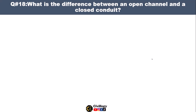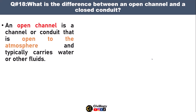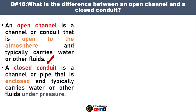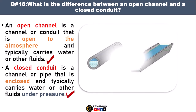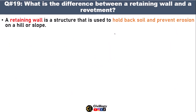Question number eighteen: what is the difference between an open channel and a closed conduit? An open channel is a channel that is open to the atmosphere and typically carries water or other fluids. Whereas a closed conduit is a channel or pipe that is enclosed and typically carries water or other fluids under pressure. The closed channel is also called a conduit.